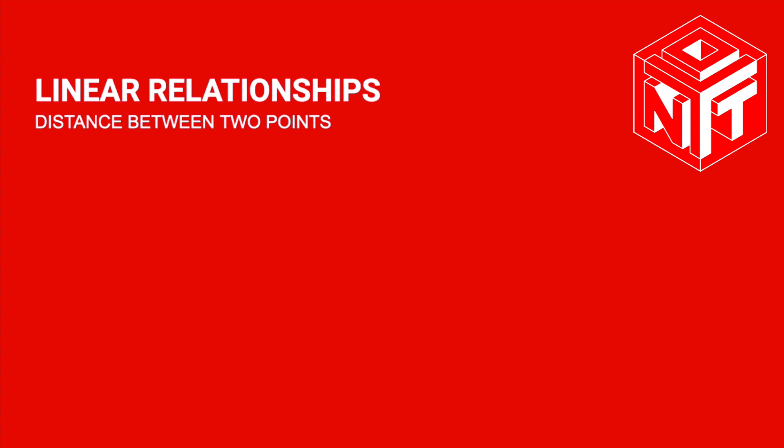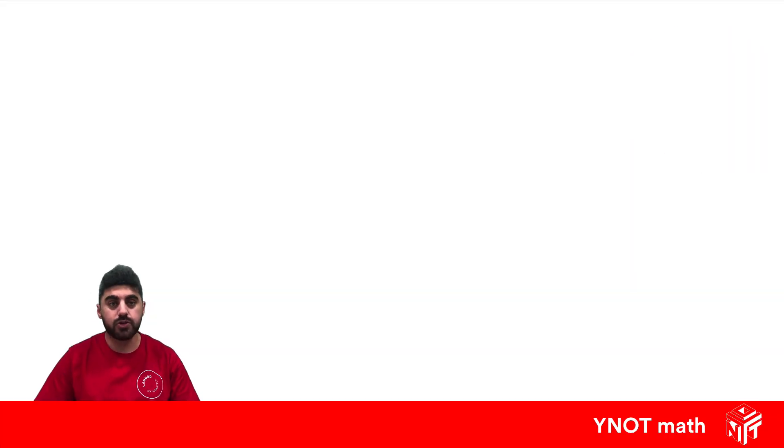Distance between two points. If we're given two points, we can find the exact distance between them. So we're going to find the distance between (7, 5) and (1, -3).